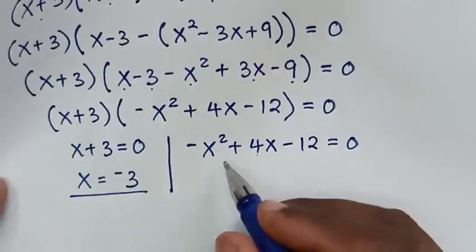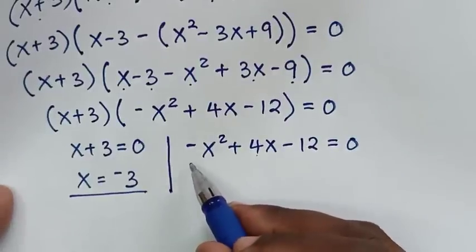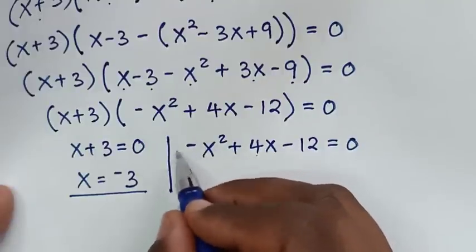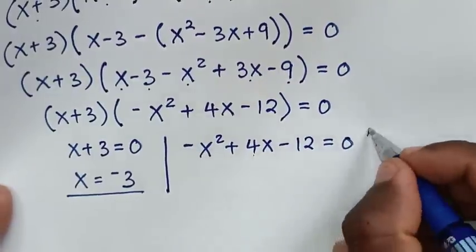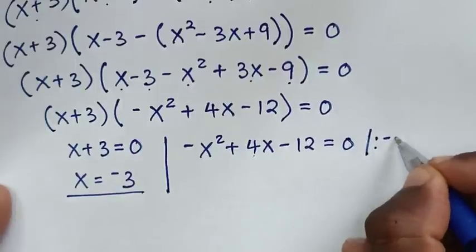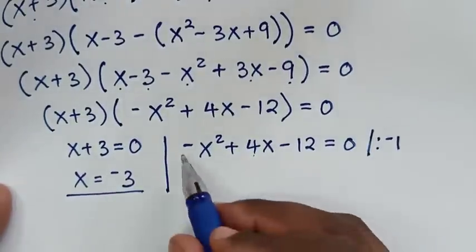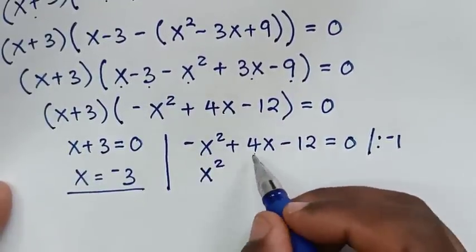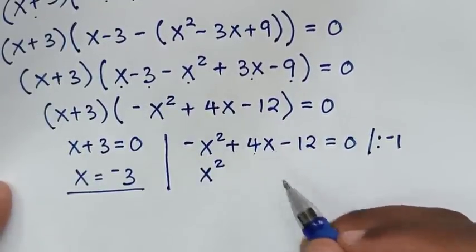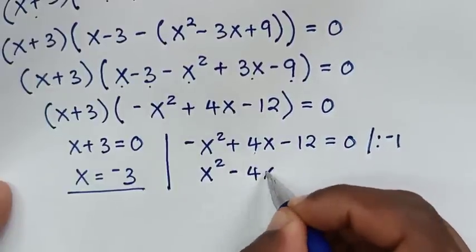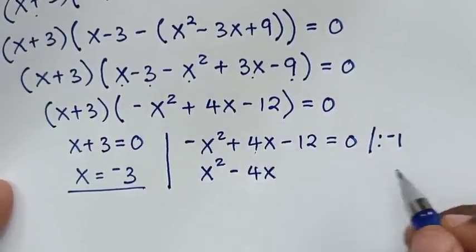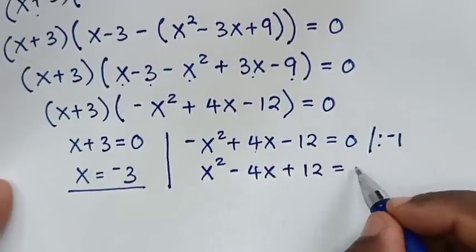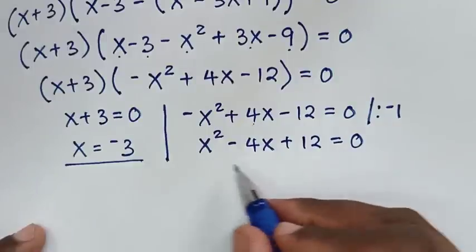To solve from this quadratic equation we will use the quadratic formula. But here we have a negative leading coefficient, so we will divide the whole equation by negative 1. This gives x squared minus 4x plus 12 equals 0.